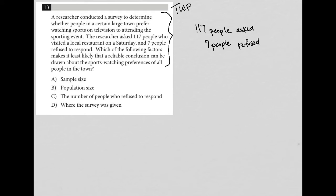OK, which of the following factors makes it least likely that a reliable conclusion can be drawn about the sports watching preferences of all people in the town? Well, so this is a weird question, right?